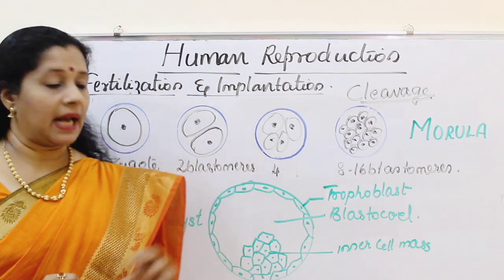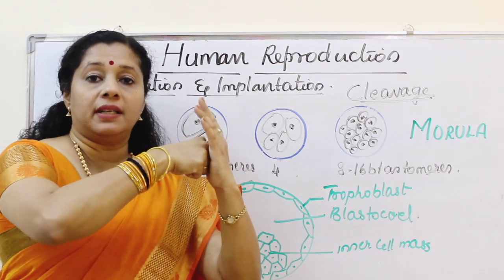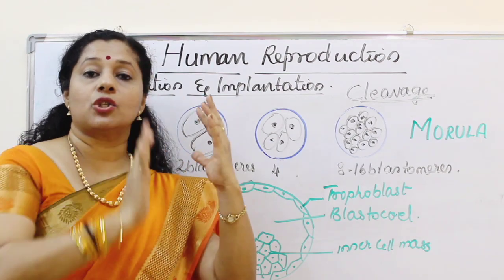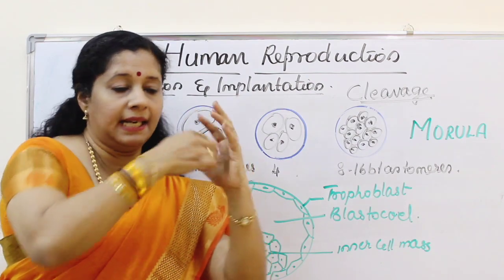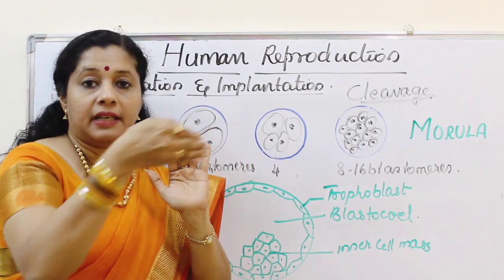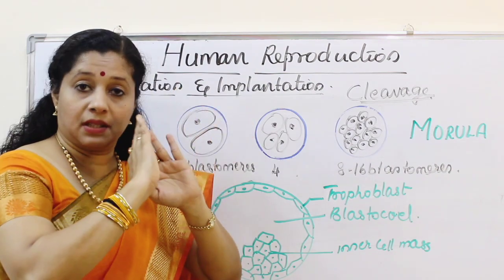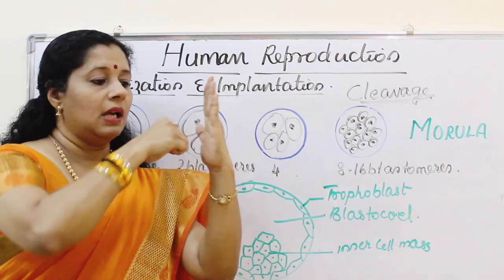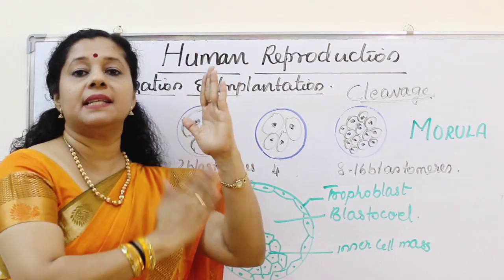During implantation, the trophoblast applies pressure on the endometrial wall. At the same time, the endometrial wall is also proliferating. As a result, the sides proliferate making a depression, into which the blastocyst enters, and the endometrial lining grows over it. So the blastocyst goes inside and there is a covering over it — it is now embedded inside.